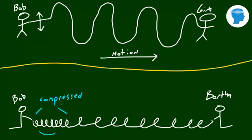Obviously, once it's released, the compressed portion of the slinky is going to travel down towards Bertha until it eventually hits her and she's going to absorb some of the energy. So that is basically the definition of a longitudinal or compression wave.